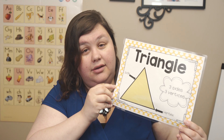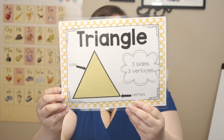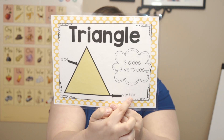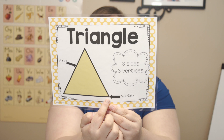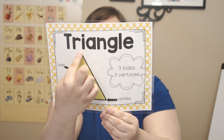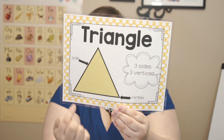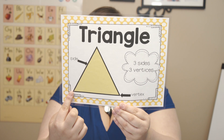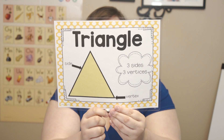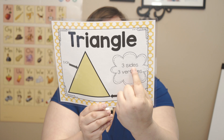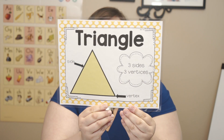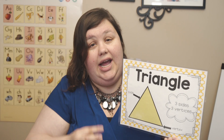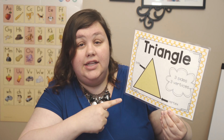Do you want to count the vertices with me? Let's see how many vertices there are. They gave us one — this says vertex, that's one vertex. Here's another vertex, here's another vertex. Let's count them: one, two, three — three vertices. A triangle has three sides and three vertices. If it's a triangle, it's always going to have three sides and three vertices. Don't forget — three sides, three vertices, it's a triangle.